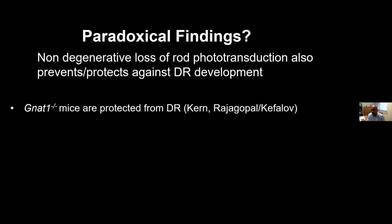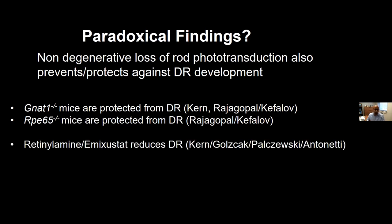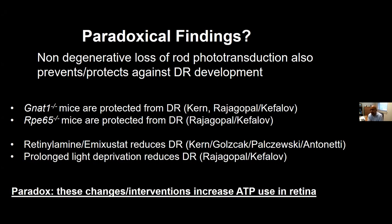Our lab, collaborating with Dr. Kefalov, also showed this in a publication a couple of years ago. We also showed that another non-degenerative mouse model, the RPE65 null, is protected from diabetic retinopathy. The UCI group showed that visual cycle inhibition reduces severity of diabetic retinopathy, and our group showed that prolonged light deprivation also protects against diabetic retinopathy. These results are paradoxical because at face value, every one of these interventions would be expected to increase ATP in the retina and therefore increase metabolic demand.